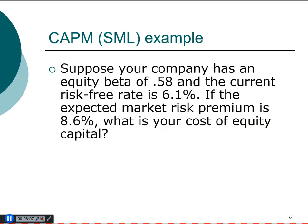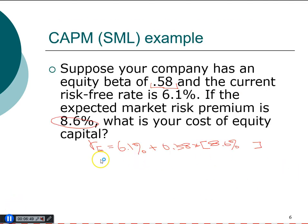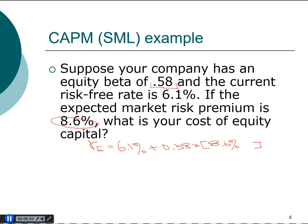For example, a company has a beta of 0.58, the current risk-free rate is 6.1%, and the market risk premium is 8.6%. We start with the risk-free rate of 6.1% and add 0.58 times 8.6%. Note that if we are given the market risk premium directly, we use it as-is; if given the market return, we must compute the market risk premium first.